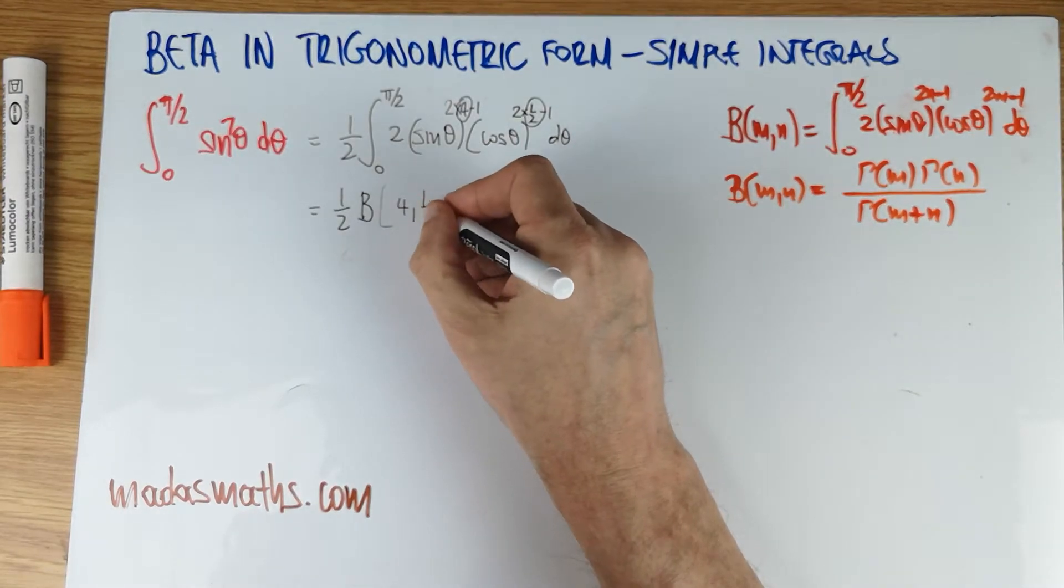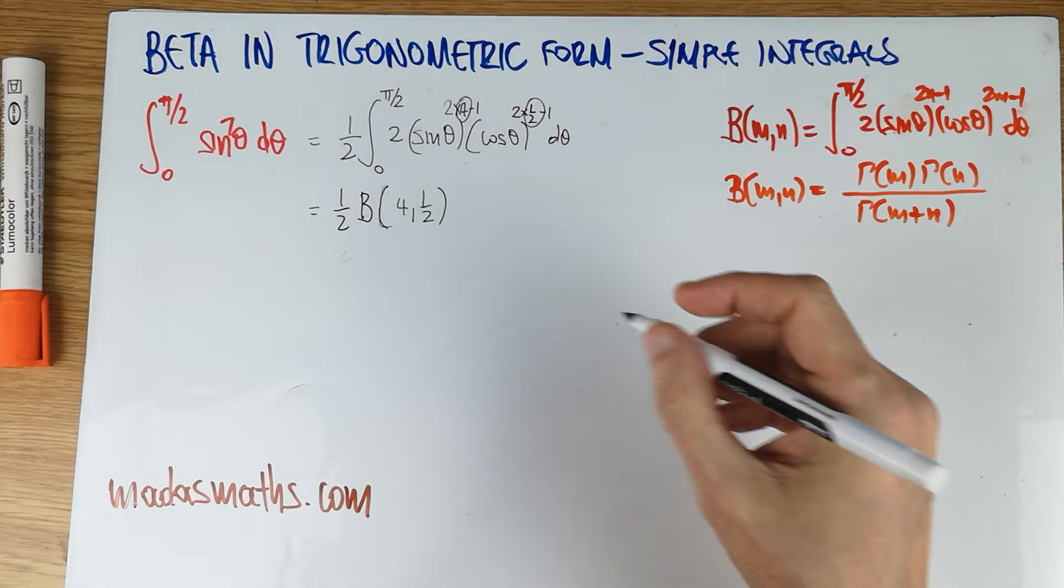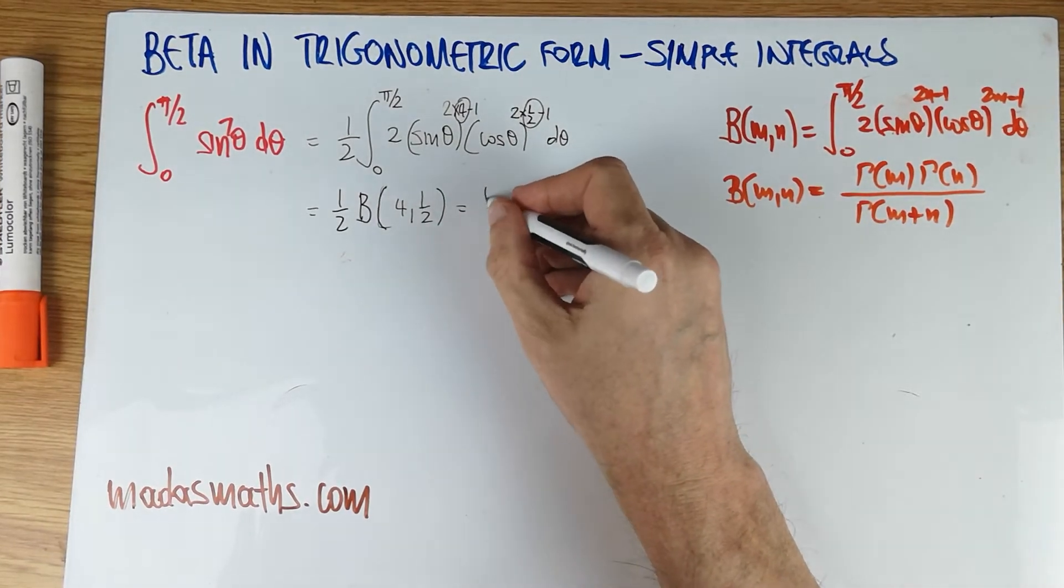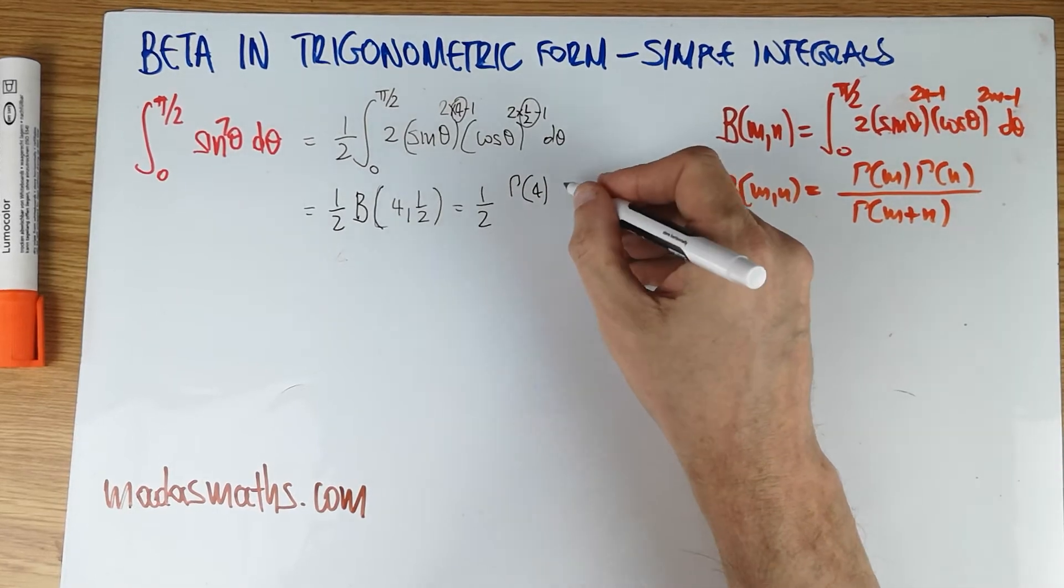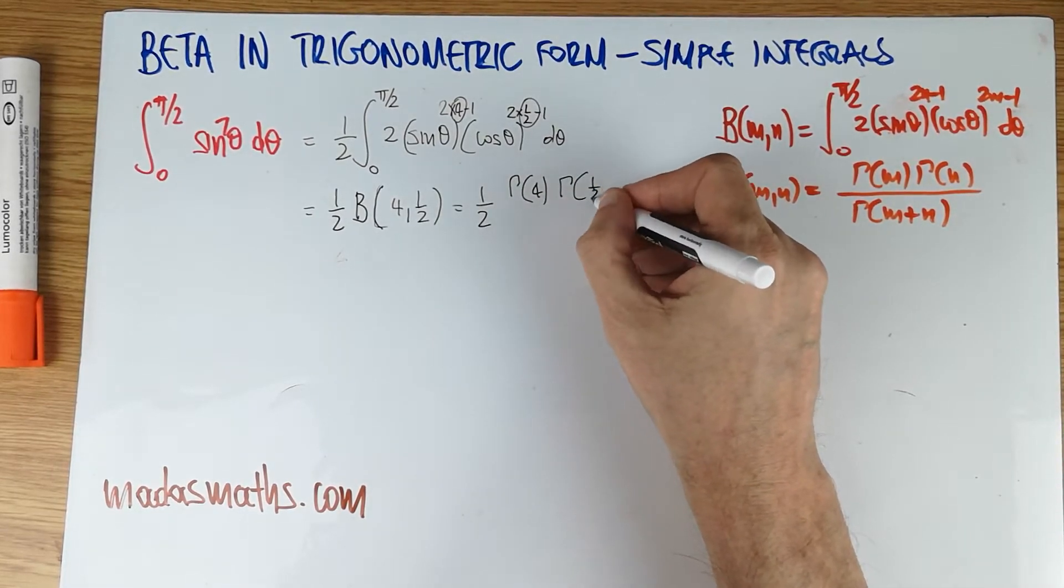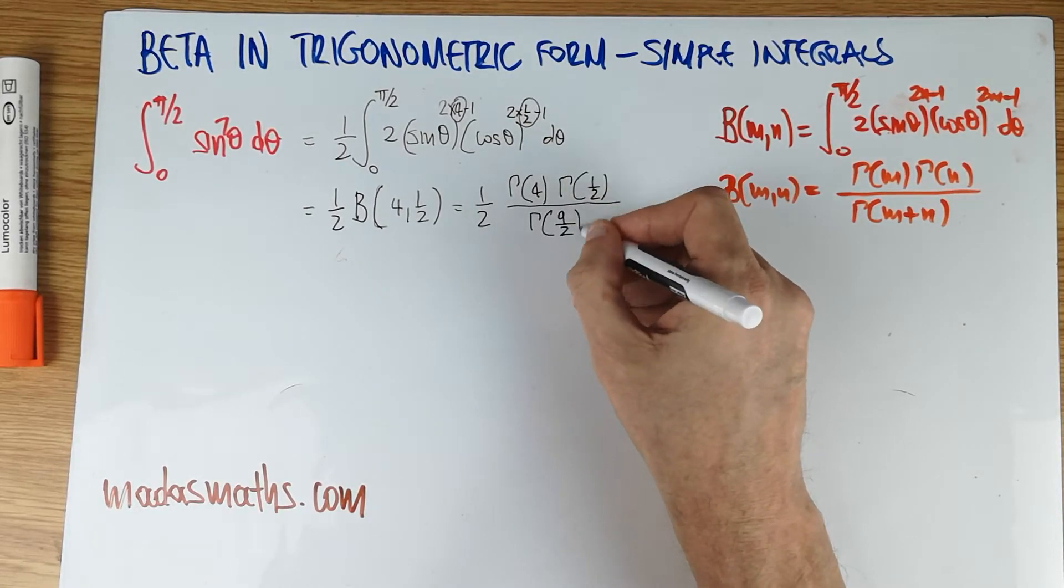So it's 4 and a half. Not 4 and a half, 4 comma half. And of course, in order to evaluate it, we're going to gammas. Gamma of 4, gamma of half, divided by the gamma of 4 and a half, or simply 9 over 2.